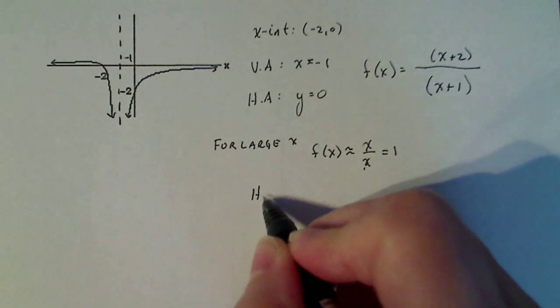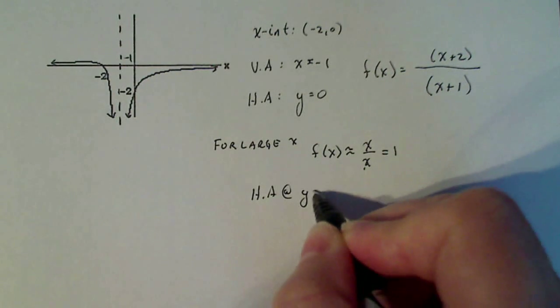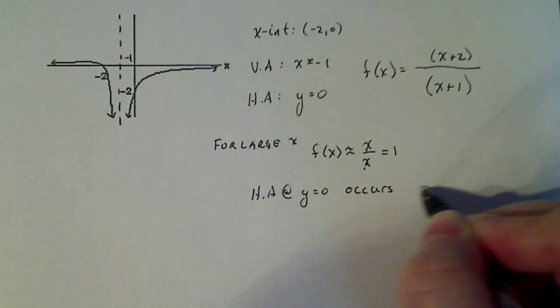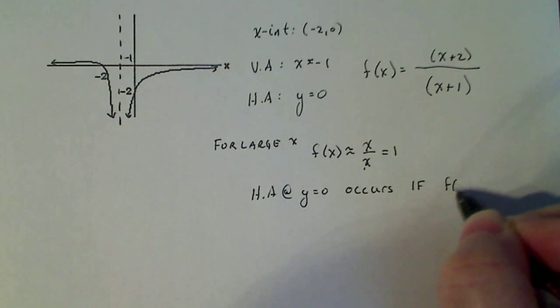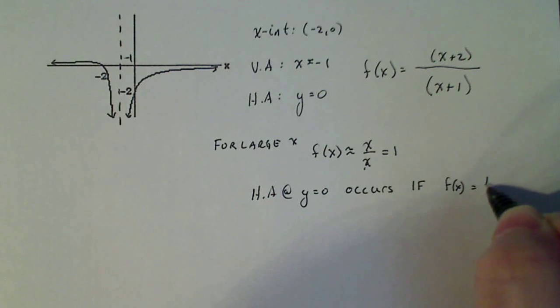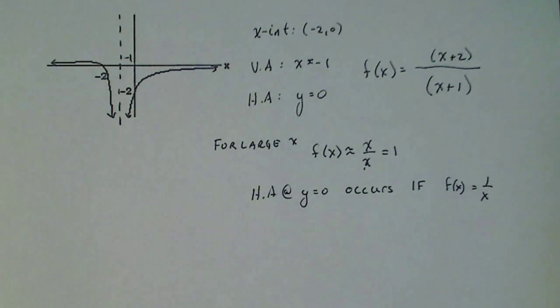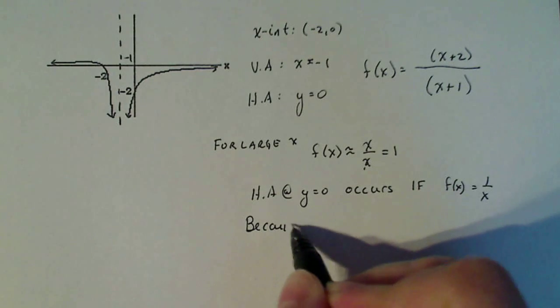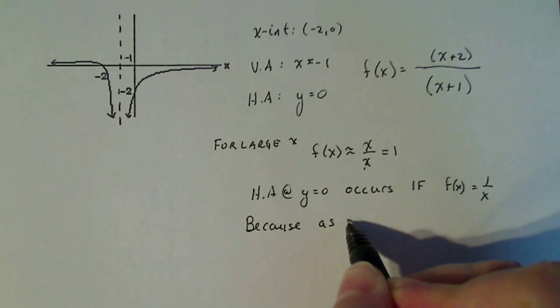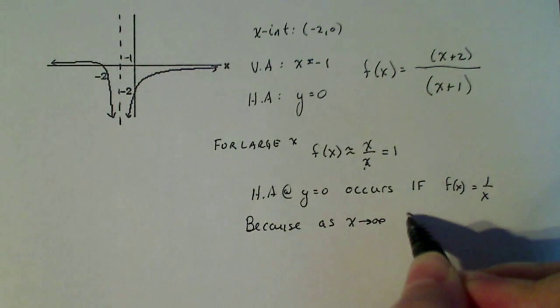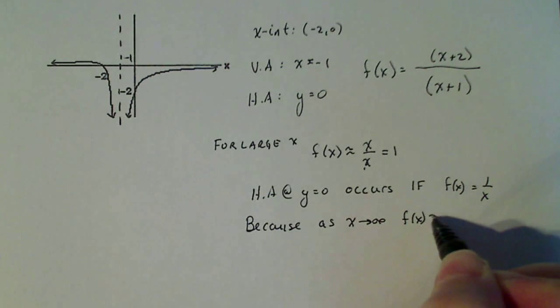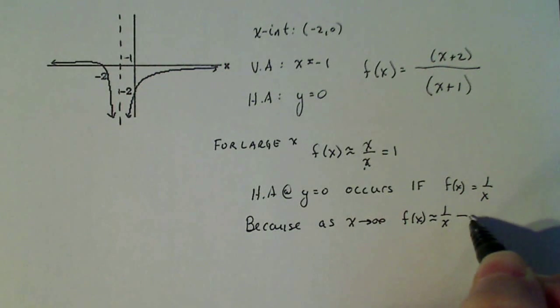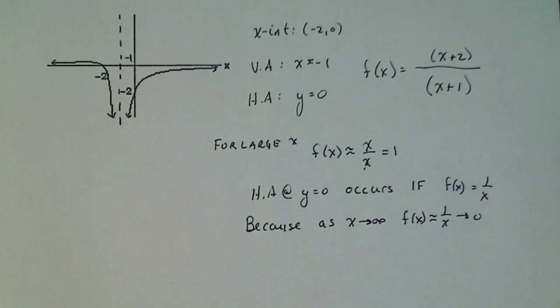So horizontal asymptote at y equals zero occurs if f of x equals one over x for large x. Because as x gets larger and larger, where does this number go? Well, it goes to zero. So let's write that down. Because as x goes to infinity, f of x approximately equals one over x goes to zero. And that's what gives us our horizontal asymptote.